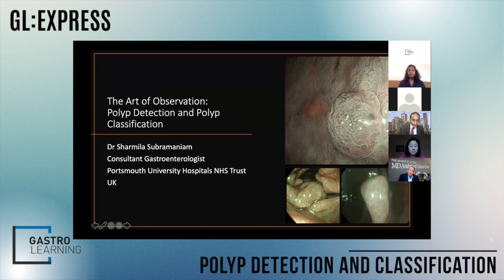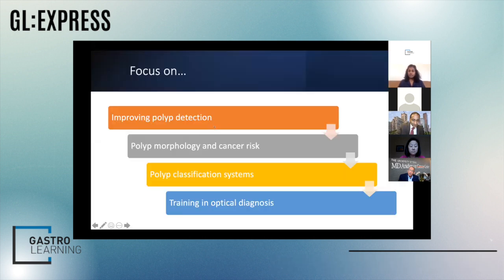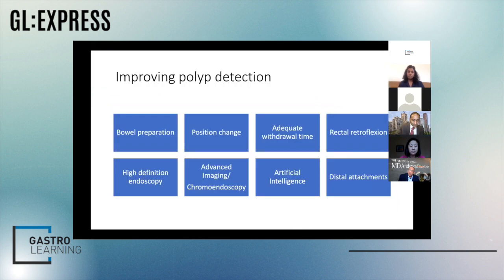I'm going to give you a whistle-stop tour on this really big topic. We'll focus on improving polyp detection, going through classifications to look at polyp morphology and how we link that with cancer risk. We'll look at different advanced imaging technologies and classification systems, and finish off with some cases and a framework for training in optical diagnosis. Getting the basics does improve your polyp detection rate.